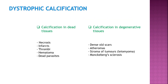Dystrophic calcification can be seen in dead tissues such as in necrosis, infarctions, thrombi, hematoma, and dead parasites. It can also be seen in degenerative tissues such as old scars, atheromas, stromal tumors, and Mönckeberg's sclerosis.